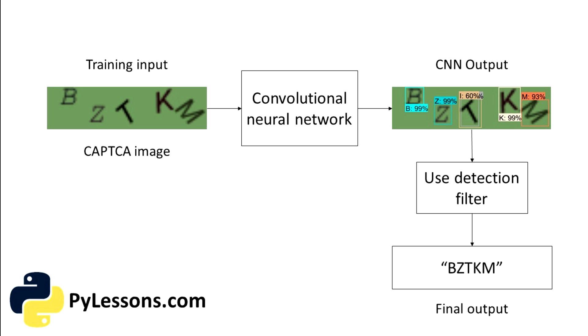But detections are not always 100% accurate. This detection percent depends on the training data we use. Moreover, our convolutional neural network might detect even more symbols than there is on the CAPTCHA image.